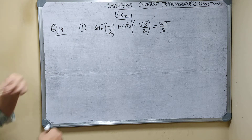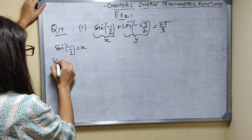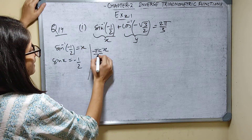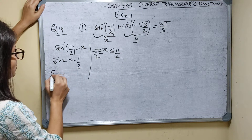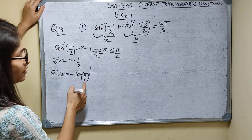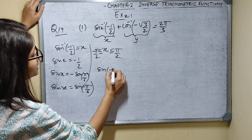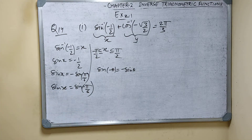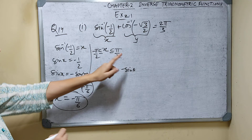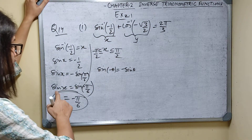Let sin inverse(minus 1 by 2) equal x, so sin x equals minus 1 by 2. For sin inverse, x lies between minus pi by 2 and pi by 2. Sin x equals minus sin pi by 6, and since sin(minus theta) equals minus sin theta, sin x equals sin(minus pi by 6). Therefore x equals minus pi by 6, which satisfies the range condition (minus 30 degrees is between minus 90 and 90 degrees).